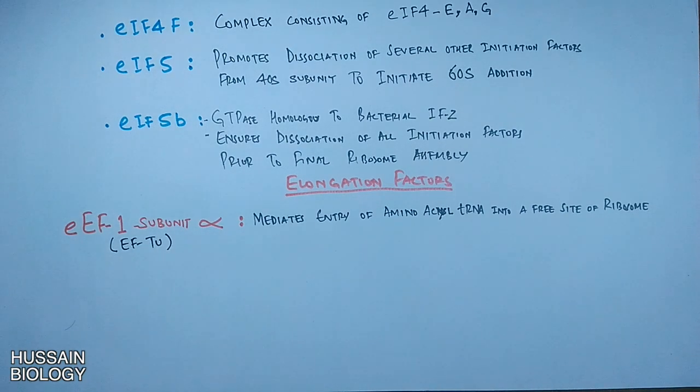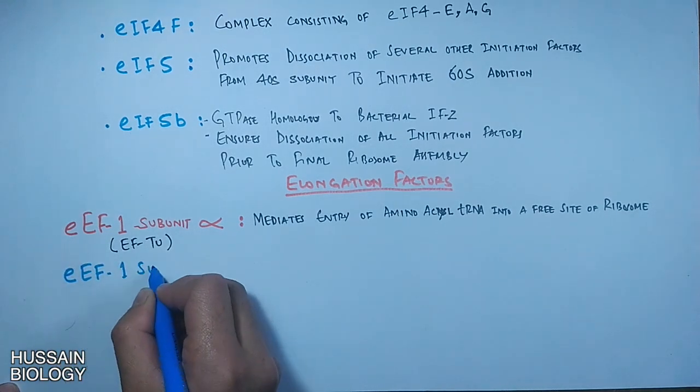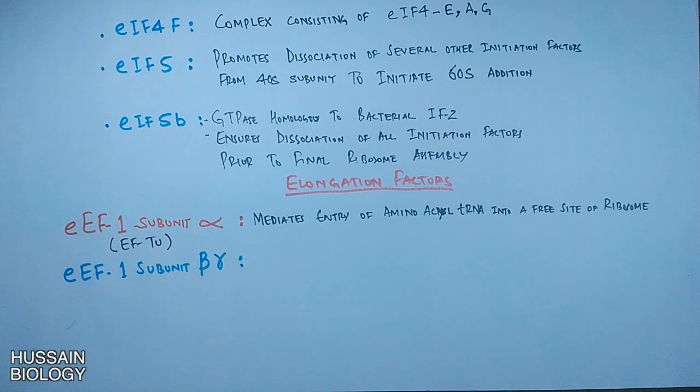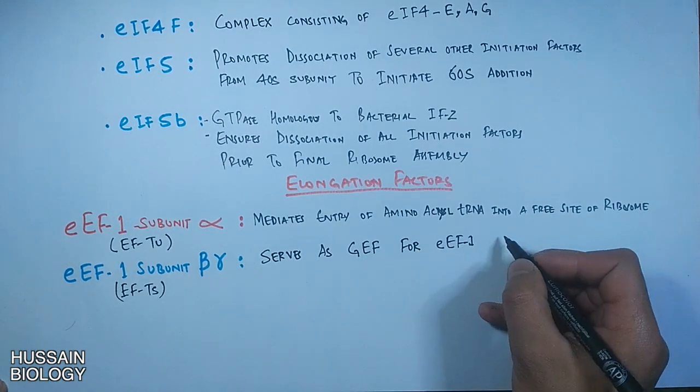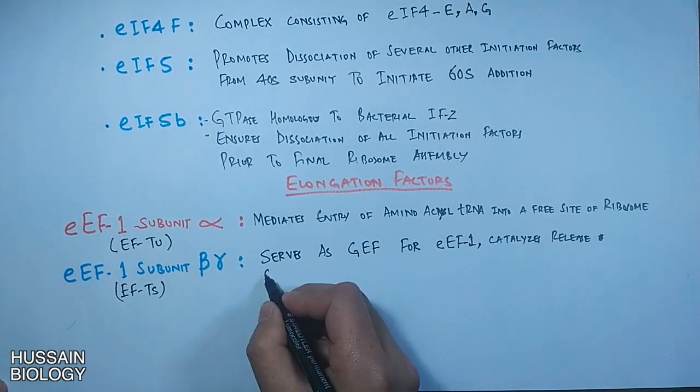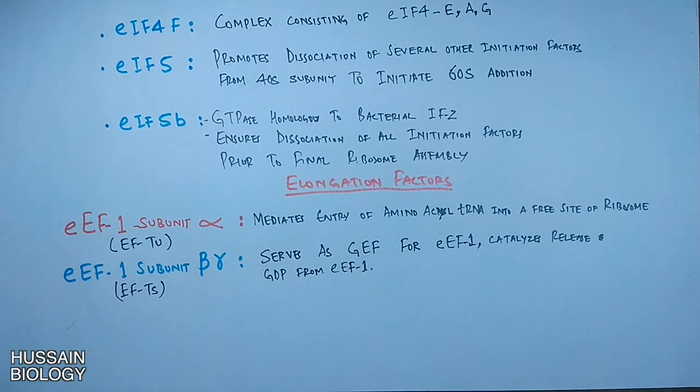Second elongation factor is EEF1 beta gamma subunit which is functional analog of EFTS in prokaryotes. It serves as guanine exchange nucleotide factor for EEF1 and catalyzes release of GDP from EEF1.